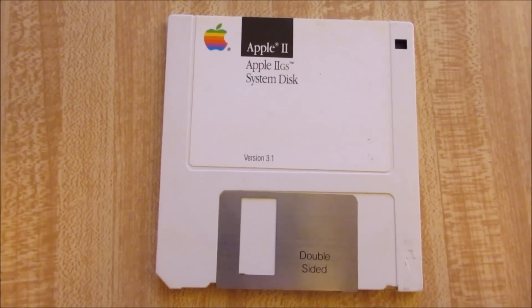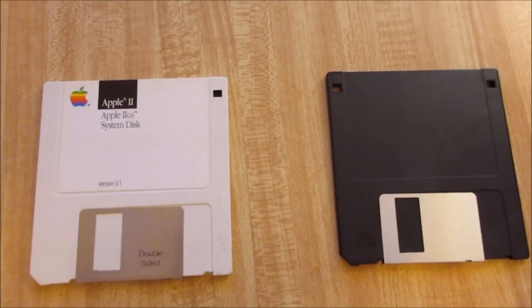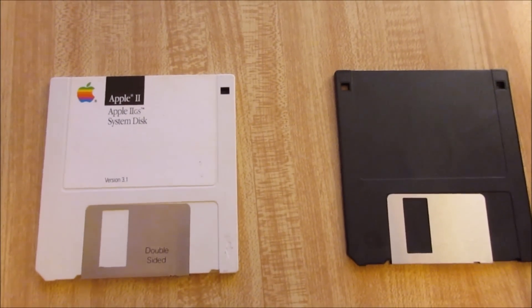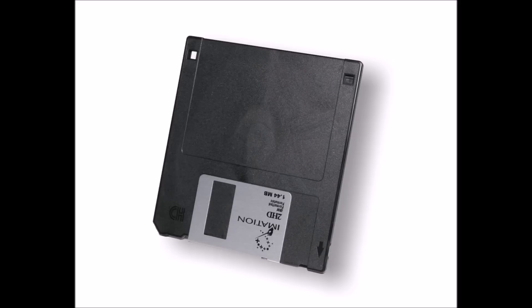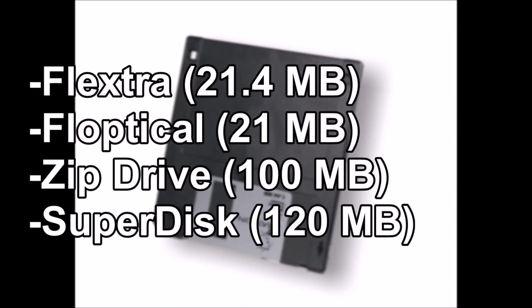Finally, it was the 1.44 megabyte high density floppy disk, which despite the hole in one corner, was visually identical to the previous disk. After those main three came a barrage of different types which held much more data, but never caught on due to the excess of formats.